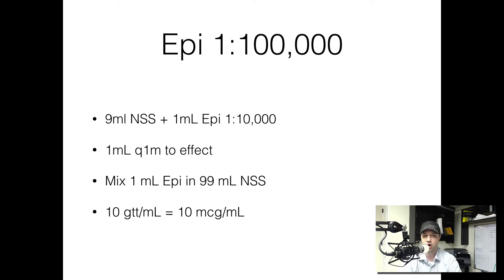Again, the whole idea post-cardiac arrest is you want to take this drug, the 1 in 100,000 concentration, and give 1 milliliter aliquots every minute or so, trying to get their blood pressure above 90 systolic.